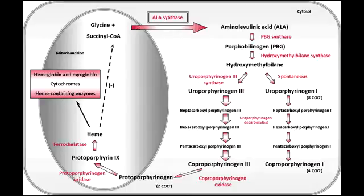What is the mnemonic to help remember these symptoms? Use the five P's for porphyria: painful abdomen, port wine-colored urine (purple in color), polyneuropathy, psychological disturbances, and porphyrias precipitated by drugs such as barbiturates.